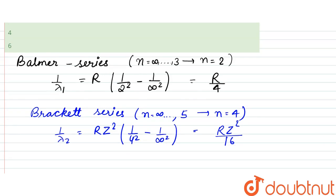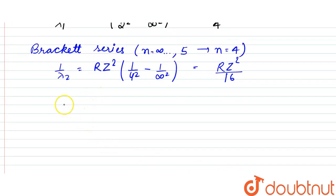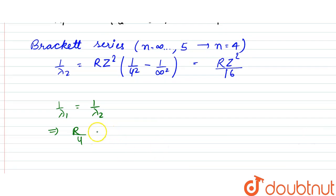So, from here, as we are given that they are same, 1 by lambda 1 would be equal to 1 by lambda 2. So, what does this imply is that R by 4, it was R by 4, so that is equal to RZ squared by 16.